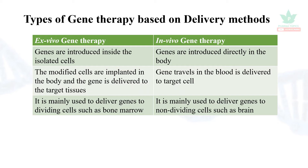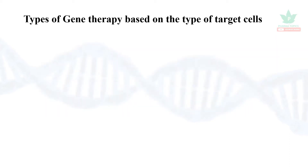An example of ex vivo gene therapy is bone marrow cells. In in vivo gene therapy, the genes are directly introduced into the target tissues — the genes travel in the blood and reach the target tissues. It is mainly used to deliver genes to non-dividing cells such as brain cells.